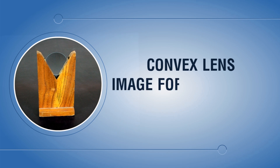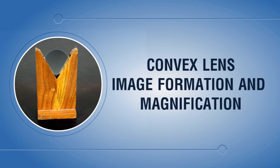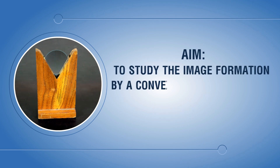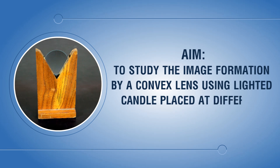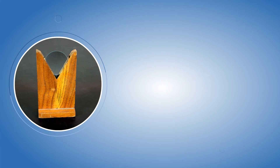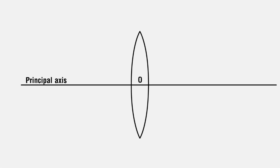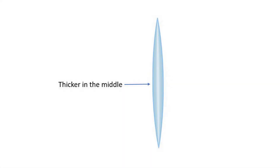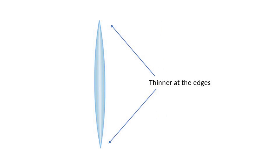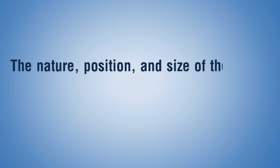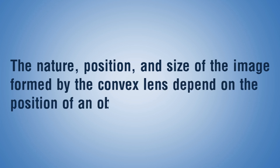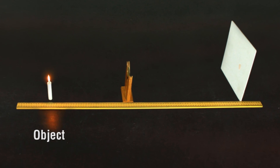Convex lens image formation and magnification: aim to study the image formation by a convex lens using a lighted candle placed at different positions. A lens that converges a beam of light incident on it is called a convex lens. Convex lenses are thicker in the middle and thinner at the edges. The nature, position, and size of the image formed by the convex lens depend on the position of the object.